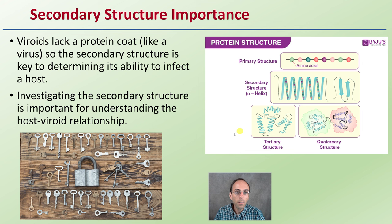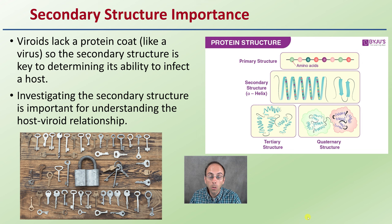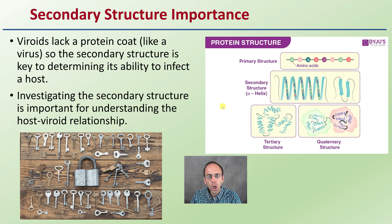Secondary structure for viroids is important because viroids lack a protein coat like a virus would have, so secondary structure is key to determining their ability to infect a particular host plant. You can think about this as a key-and-lock concept: the key changes while the lock stays the same, and it won't be a good fit. So this host-viroid relationship matters — changes in structure could potentially make the viroid more or less virulent.